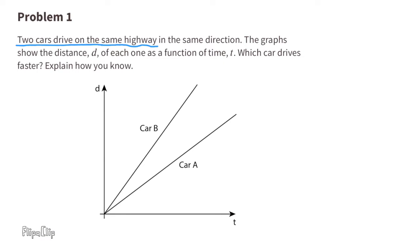Problem number 1. Two cars drive on the same highway in the same direction. The graphs show the distance d of each one as a function of time, t. Which car drives faster?